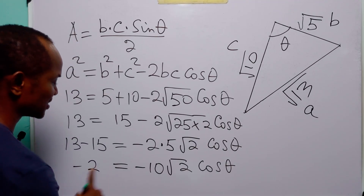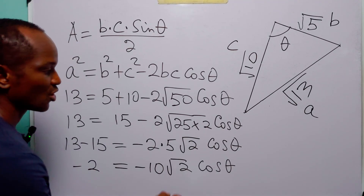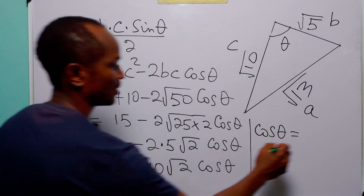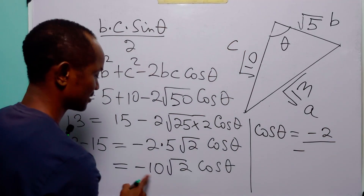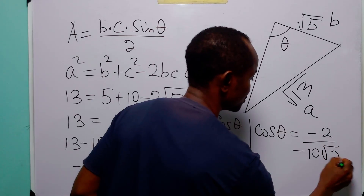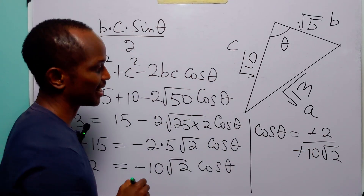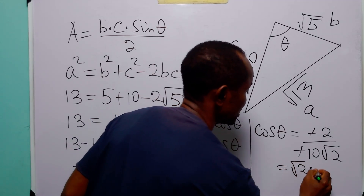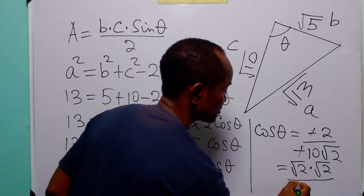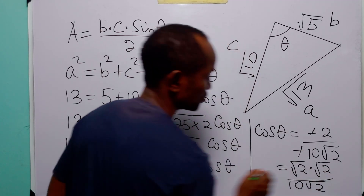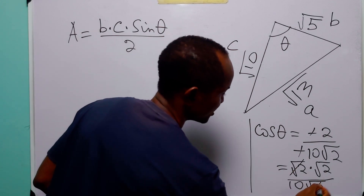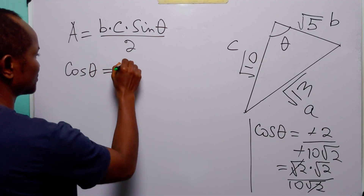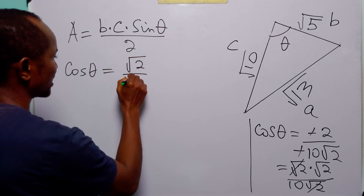Dividing both sides by −10√2, we have cos θ = −2 / (−10√2). The negatives cancel. We know that 2 = √2 × √2, so this becomes √2 × √2 over 10√2. The √2 in the numerator cancels with the √2 in the denominator, giving us cos θ = √2 / 10.